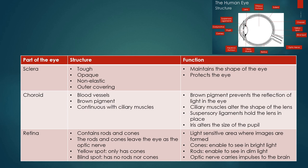Now the three layers of the eye. The sclera is the white part of your eye that surrounds your iris, which is the colored part. The sclera is tough, opaque, non-elastic, and is the outer covering. Its function is it maintains the shape of the eye because it is tough and non-elastic, so it's not very movable. It also protects the eye.